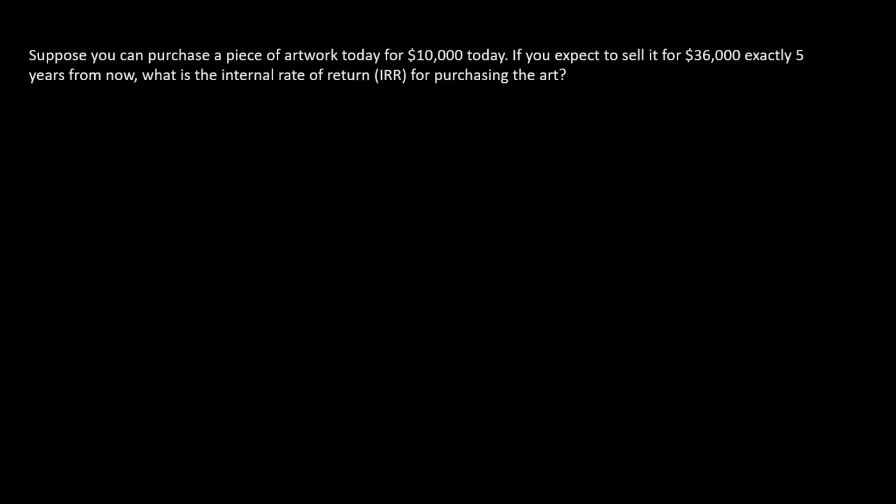Here's another simple case that has an easy closed form solution. You're going to buy a piece of art today, and then you're going to sell it five years from now. And so you've got no intermediate cash flows at all. Instead, you just have the ten thousand dollar purchase today and the thirty-six thousand dollar inflow five years from now.